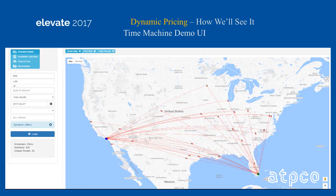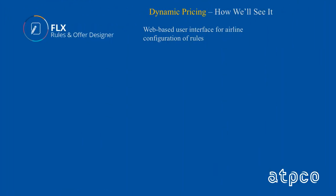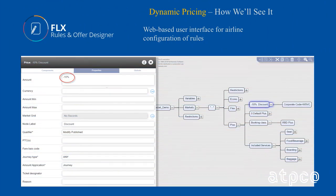You will see it with the UI we call Time Machine — we built this UI just to showcase our products. And you will see FairLogix's rules and offer designer, which is a mind-mapping tool that lets you as an airline basically define any idea or rule you want to implement.